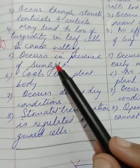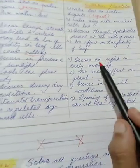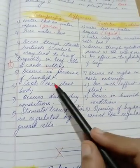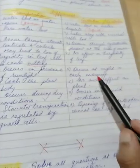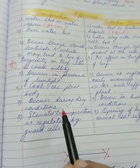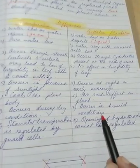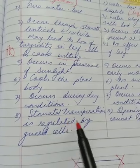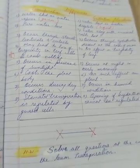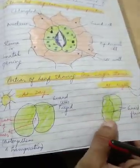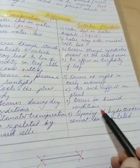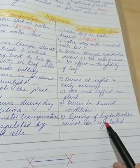Then transpiration occurs in the presence of sunlight, whereas guttation occurs at night or early morning. Transpiration cools the plant body, whereas in guttation there is no such effect on the plant. Transpiration occurs during dry conditions - that is when the humidity is not there - whereas here it occurs during humid weather or climate. Then finally, stomatal transpiration is regulated by guard cells, whereas the opening of hydathodes cannot be regulated because they are permanently open.